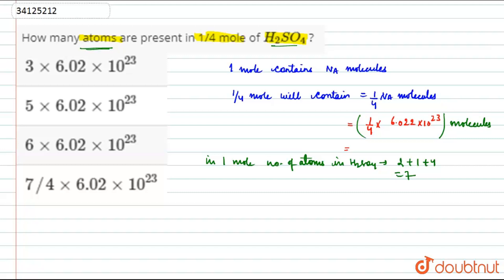So that means the total number of molecules will get multiplied by 7. So, total number of atoms will be equal to 7/4 into 6.022 times 10 to the power 23. This will be our final answer. Option D matches, so answer here will be Option D. Thank you for watching.